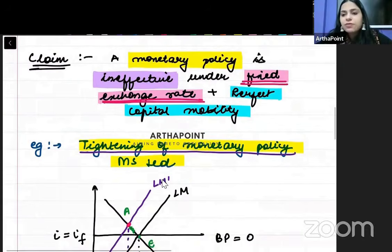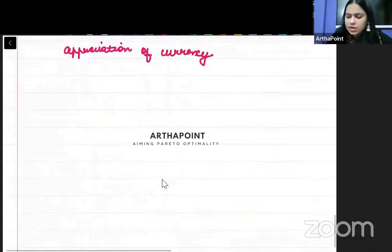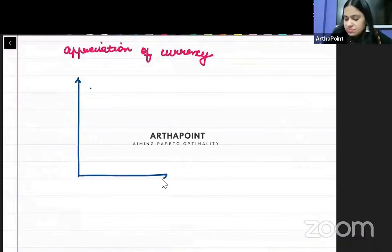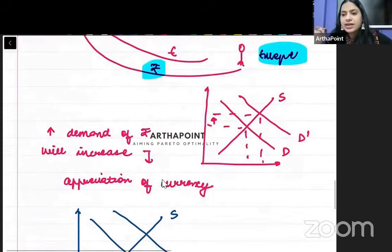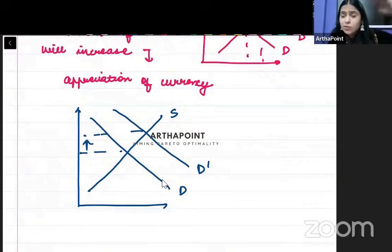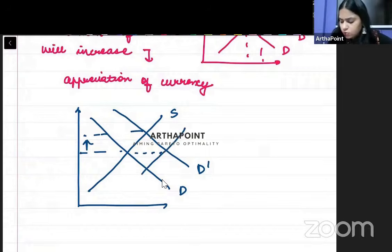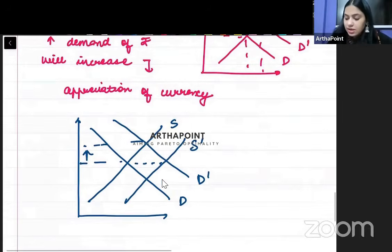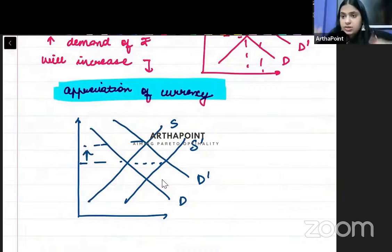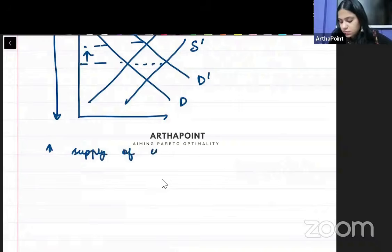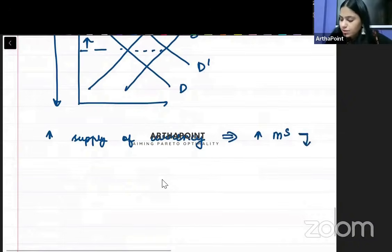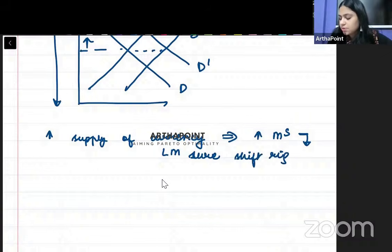We need to depreciate it back. So if we want depreciation to take place — in simple demand and supply terms, if I want to bring down the price of something whose demand has already pushed the price up — the demand increased, so its price went up. If I don't want its price to increase, I will increase its supply. The same will happen here: the currency appreciated because demand was very heavy. If I want the demand to come down, I will have to increase the supply of the currency — meaning increasing the supply of money.